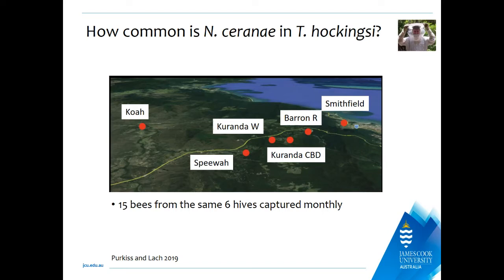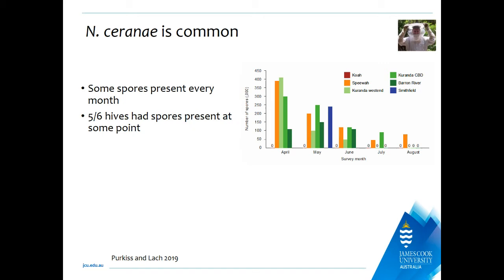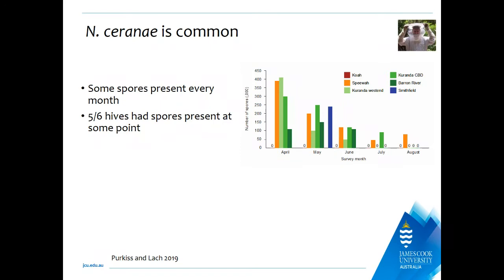We also asked how common this gut parasite is in Tetragonula hockingsi. Terry sampled from hives across the Cairns region — from Koa down to Smithfield — capturing 15 bees from six hives every month from April to August. All but the Koa hive had Nosema spores present at some point over the five-month period. There appears to be a downward trend, which we're interested in following up on to see if this is seasonal.